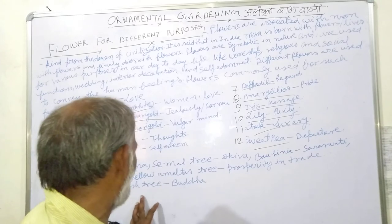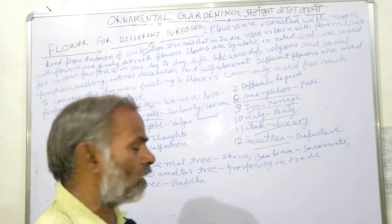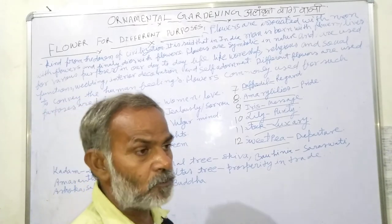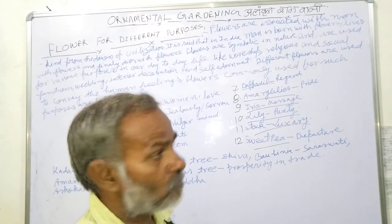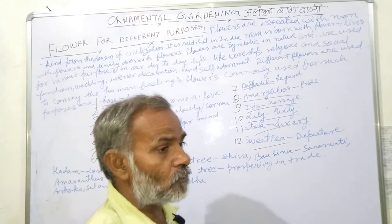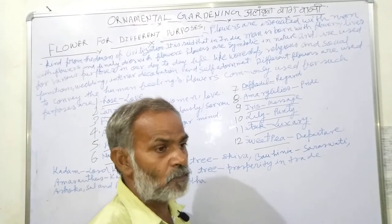Asoka, Sal and philosophy are associated with the life of Buddha. In this regard, you can see that flowers hold deep significance — Muhammad Sahib also spoke about the importance of flowers.